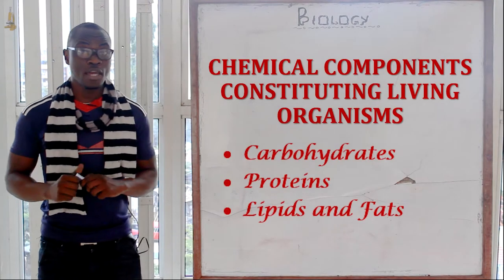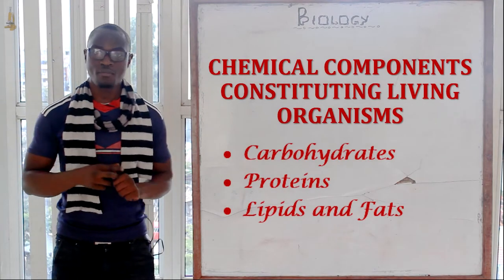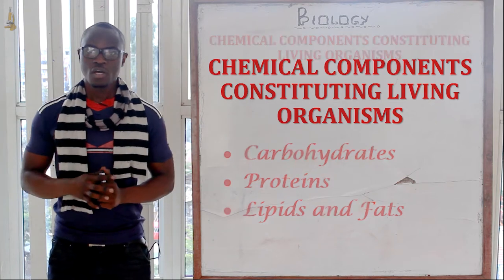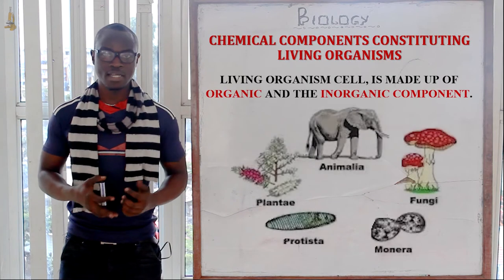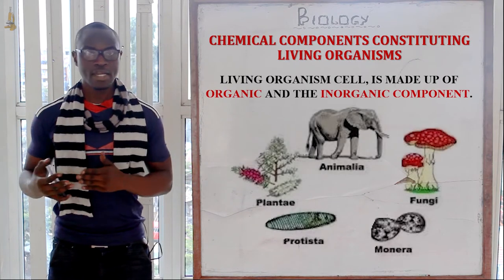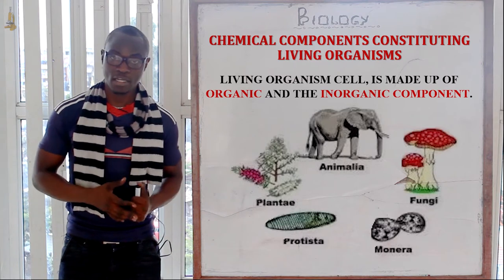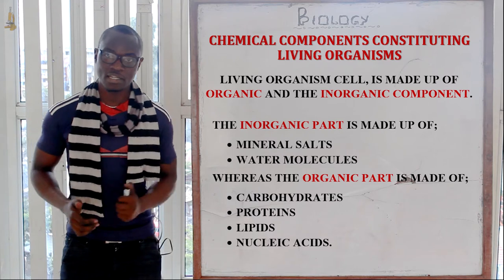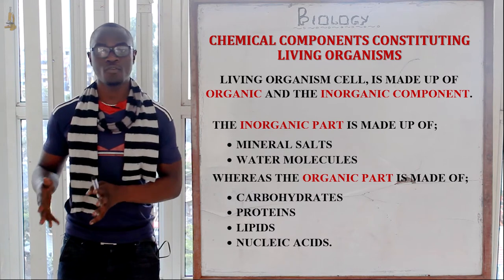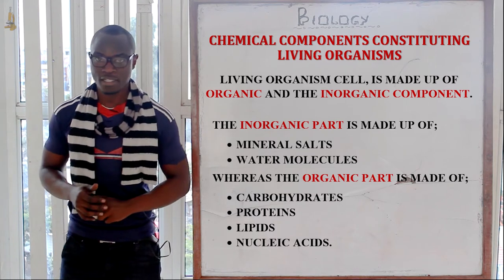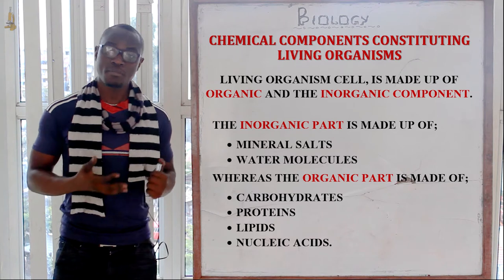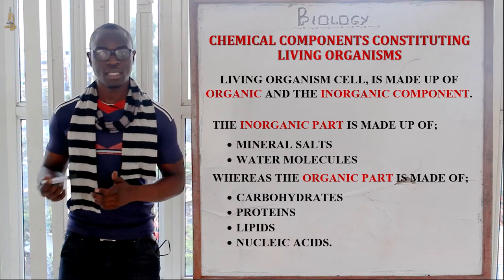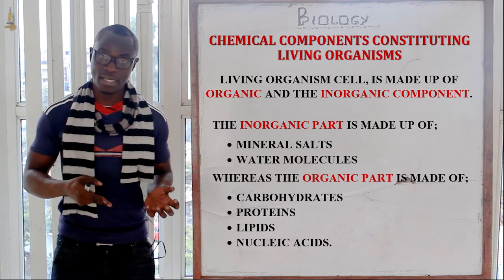Welcome to this class where today we discuss the chemical compounds constituting living organisms. The cells of living organisms are mainly made up of an organic component and an inorganic component. The inorganic components include salt and water, while the organic part is made up of carbohydrates, protein, lipids, and nucleic acids.